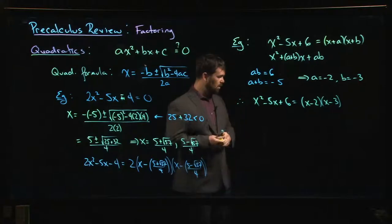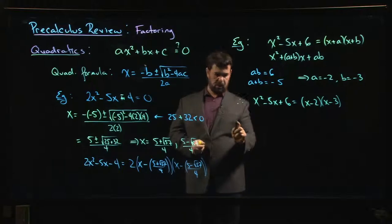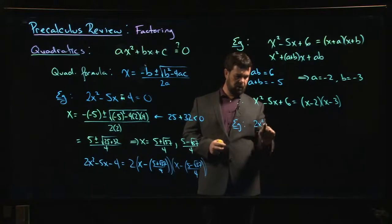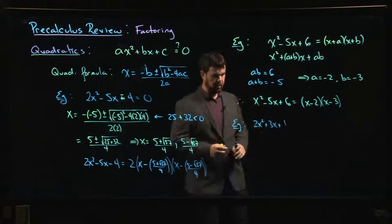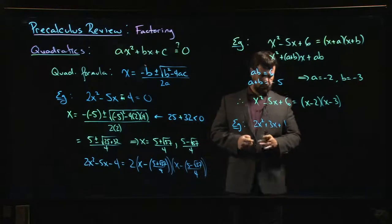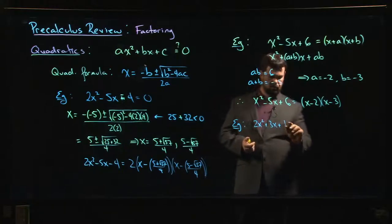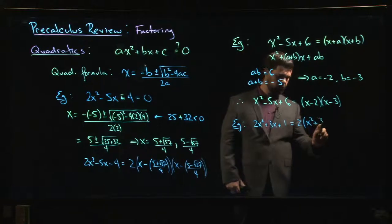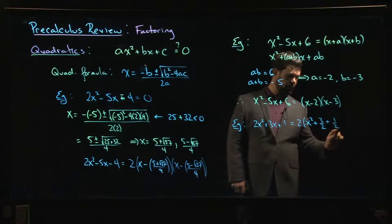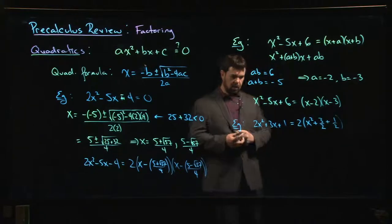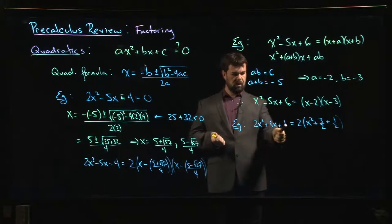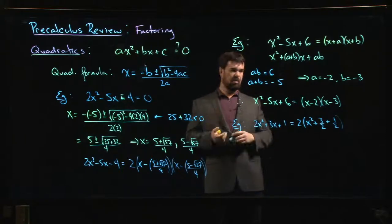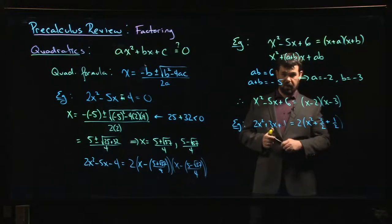Things are slightly more complicated when you have a leading coefficient in front of x². Let's quickly try 2x² + 3x + 1. One approach is to first factor out that leading coefficient, which reduces it to a problem like before, though now there are fractions involved — 3/2 and 1/2. From the rational roots theorem, the only possible factors are ±1 or ±1/2, so things are narrowed down a bit.